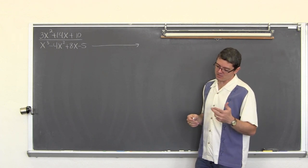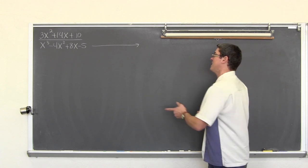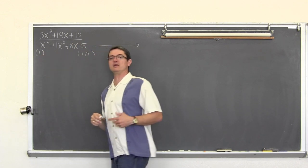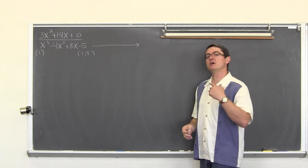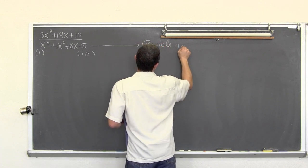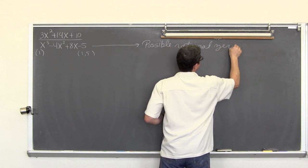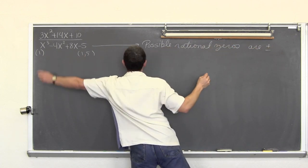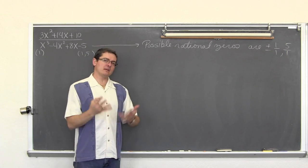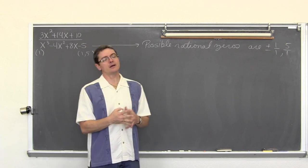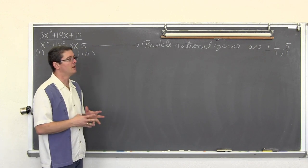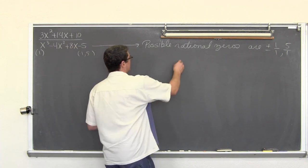We will have to use the rational zero root theorem, where you take all the factors of the constant — which are one and five — along with all the factors of the leading coefficient, and put factors of the constant over factors of the leading coefficient. Our possible rational zeros are plus or minus one over one and five over one. I already know the answer, so I just want to quickly remind you: one will synthetically divide evenly out of this cubic.